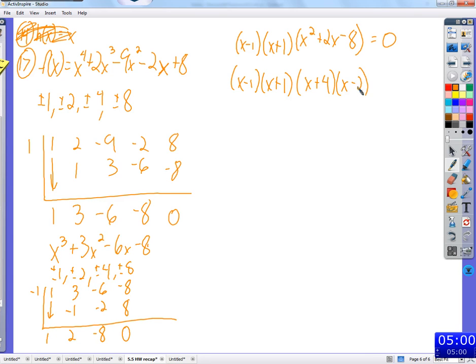X minus one times x plus one times these two factors. Positive four, negative two equals zero. So x minus one equals zero, x equals one. X equals negative one from this one. X plus four equals zero, negative four. And x equals two. So all of these. These are our four zeros.